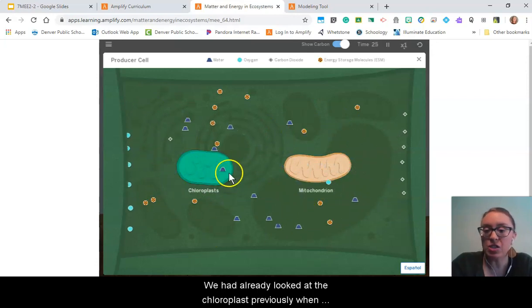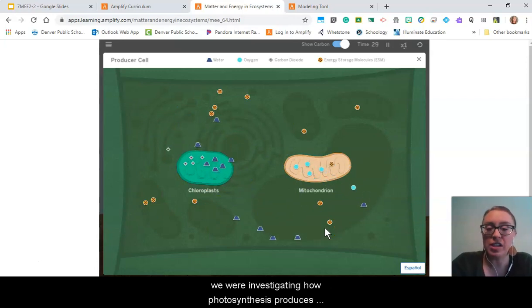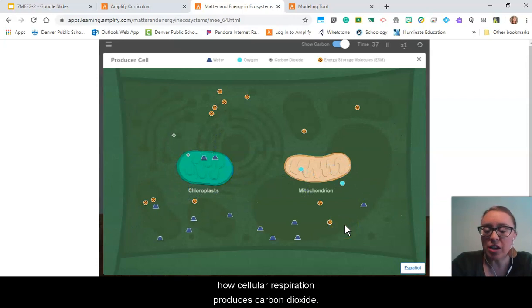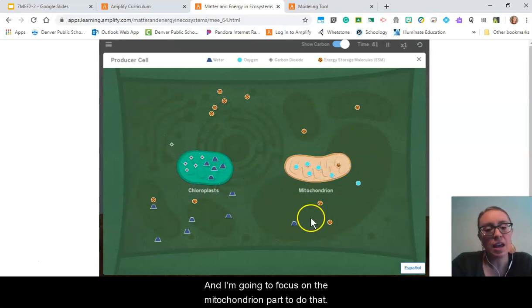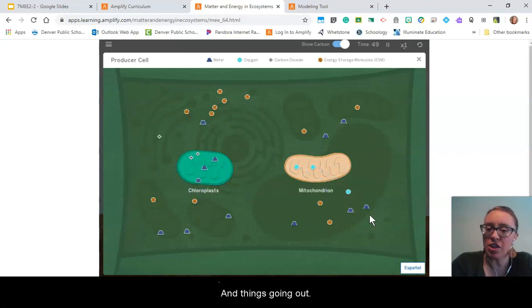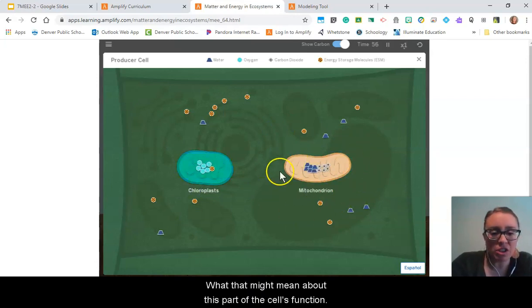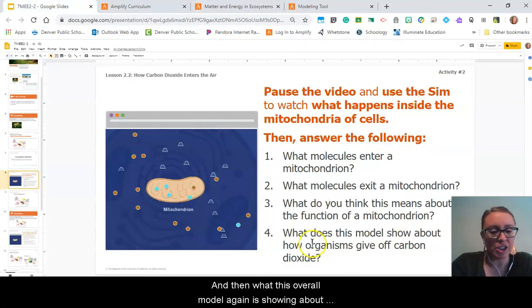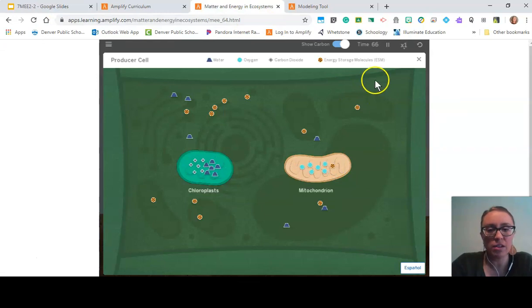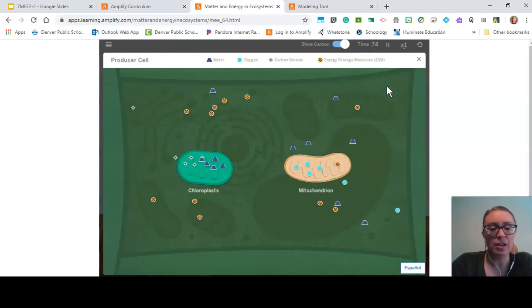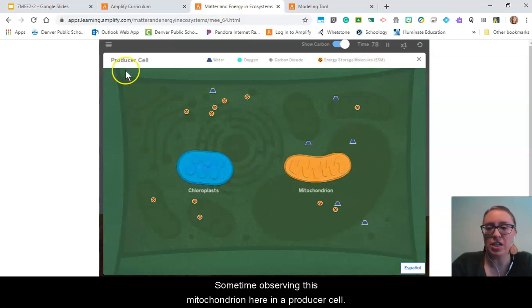We already looked at the chloroplast previously when we were investigating how photosynthesis produces energy storage molecules. Right now we're considering how cellular respiration produces carbon dioxide, and I'm going to focus on the mitochondrion part to do that. I should be observing things going in and things going out of this particular mitochondrion, what that might mean about this part of the cell's function or job, and what this overall model is showing about how organisms give off carbon dioxide. Remember we have our key up here for what those little tiny color and shape particles look like.